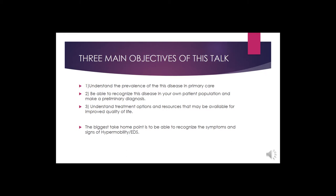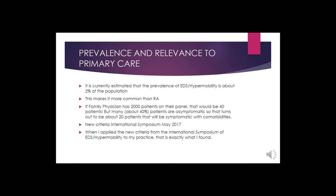With respect to relevance in primary care, according to the American Journal of Human Genetics, the prevalence of EDS hypermobility is about 2% of the population, which actually makes it more common than rheumatoid arthritis. A family physician with about 2,000 patients would have roughly 40 patients with EDS, of whom about 20 would be symptomatic with comorbidities, since many are asymptomatic across the wide spectrum.